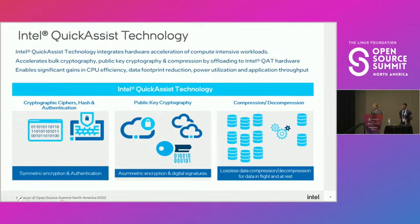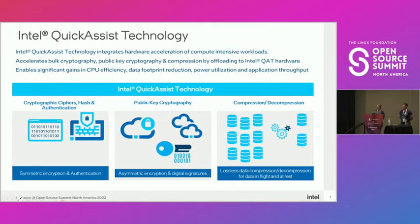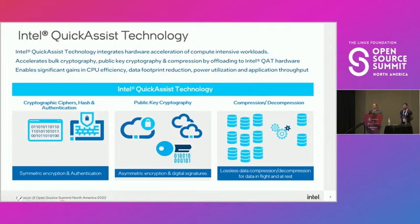The QuickAssist device optimizes cryptography and data compression. For cryptography there are two types: symmetric crypto — bulk ciphers like AES and SHA — for authentication and ciphering; and asymmetric or public key cryptography with engines for digital signature, elliptic curve, and primitives like point multiply and point inverse. These are compute-intensive on the CPU. The third area is data compression and decompression, with associated checksums.